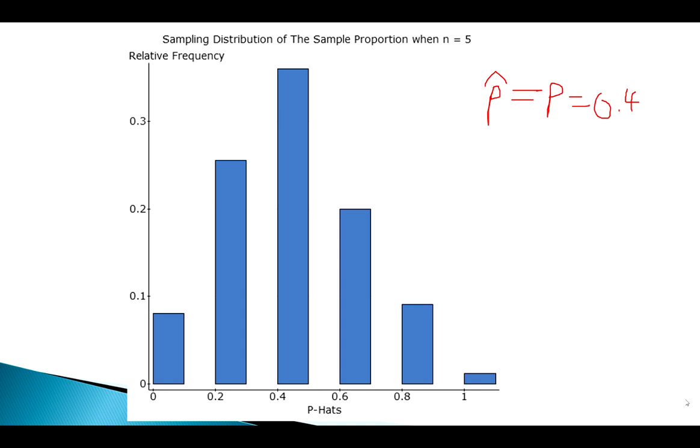But let's assume p is 0.4. So if this is an accurate estimate, the center should be at about 0.4, and looks pretty good. I think our center's probably about 0.4.